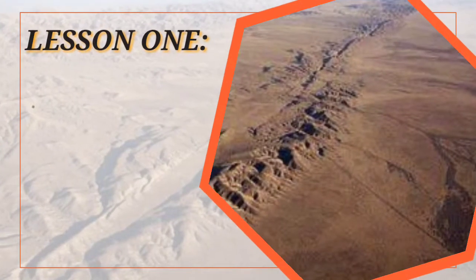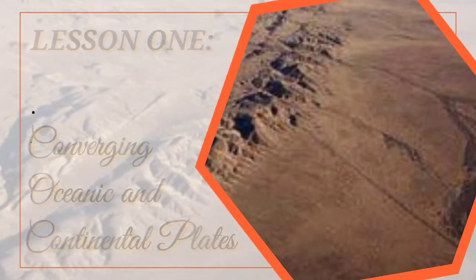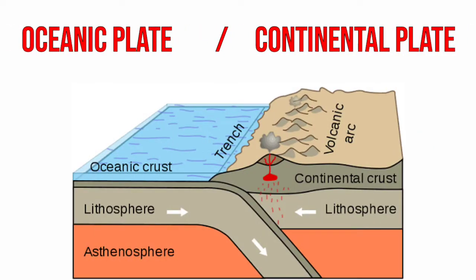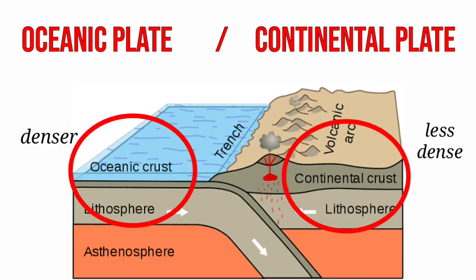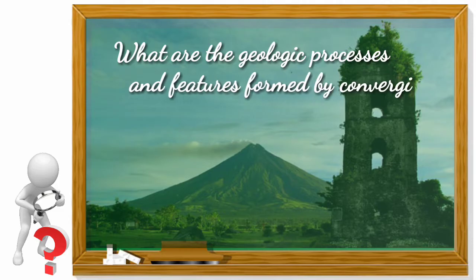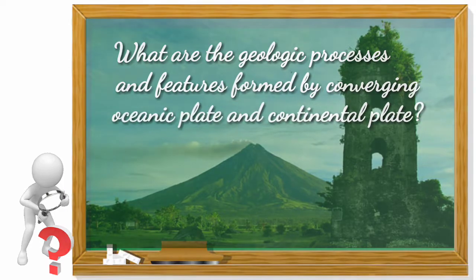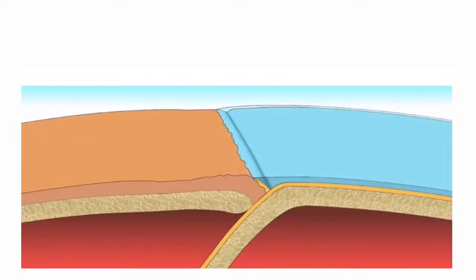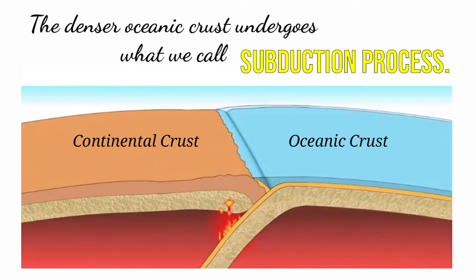Let's start with lesson one: converging oceanic and continental plates. This type of convergent plate boundary happens when a denser oceanic plate collides with a less dense continental plate. When collision happens, the denser oceanic crust undergoes what we call the subduction process.